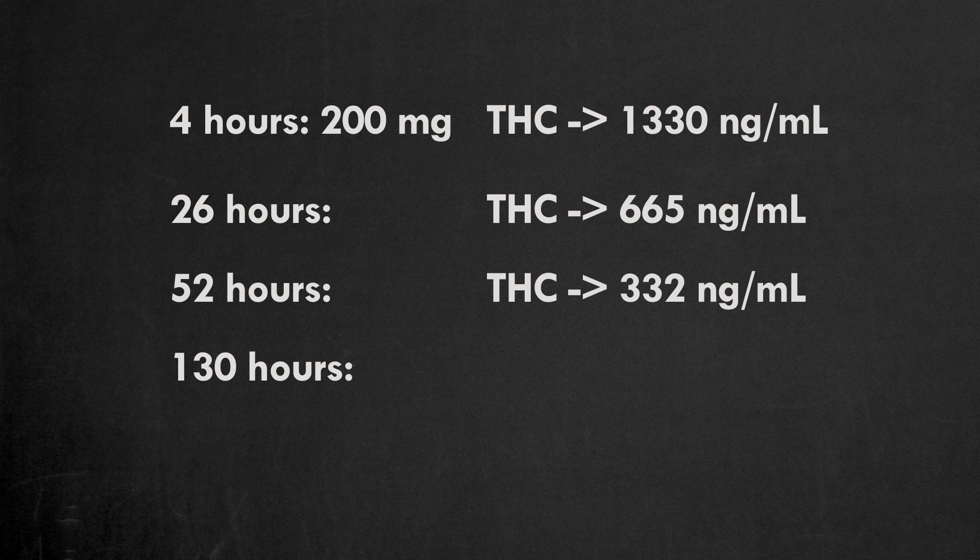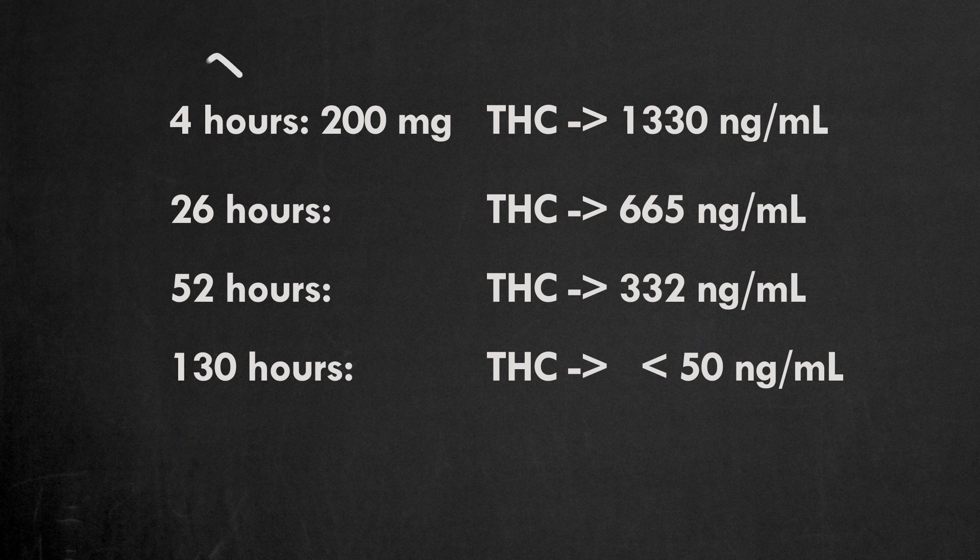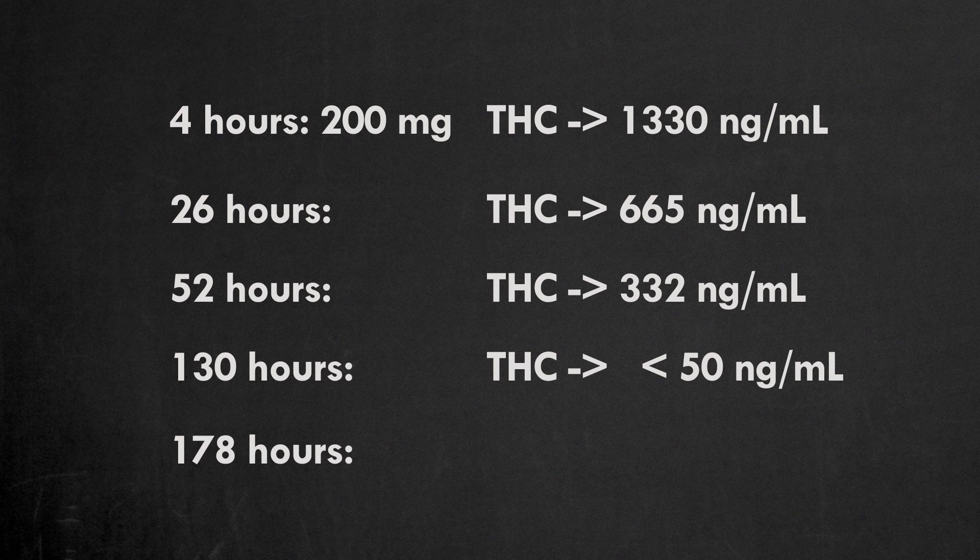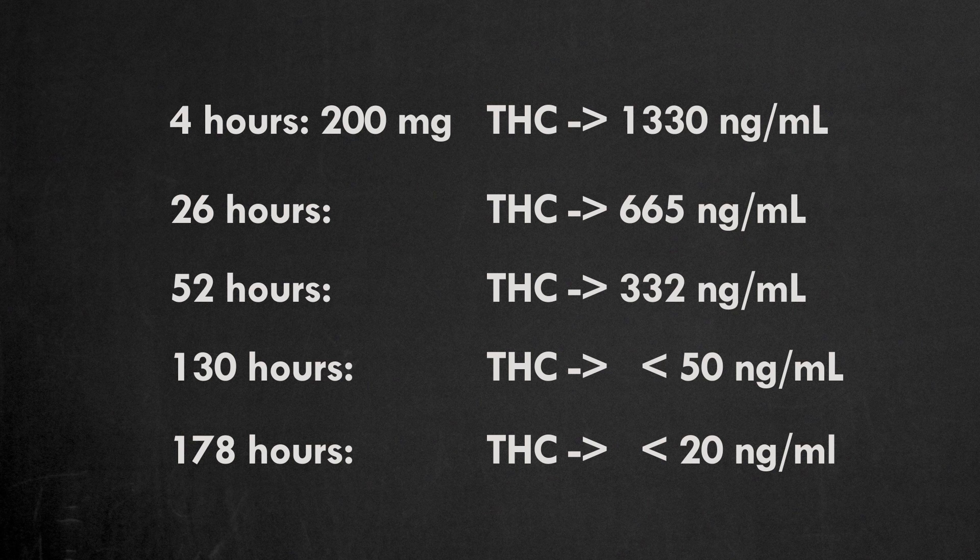After 130 hours, the concentration will drop below 50 ng per ml, the cut-off level of a urine immunoassay drug test. It will take 2 more days for the THC concentration to drop below 20 ng per ml, the cut-off level of the gas chromatography urine drug test.